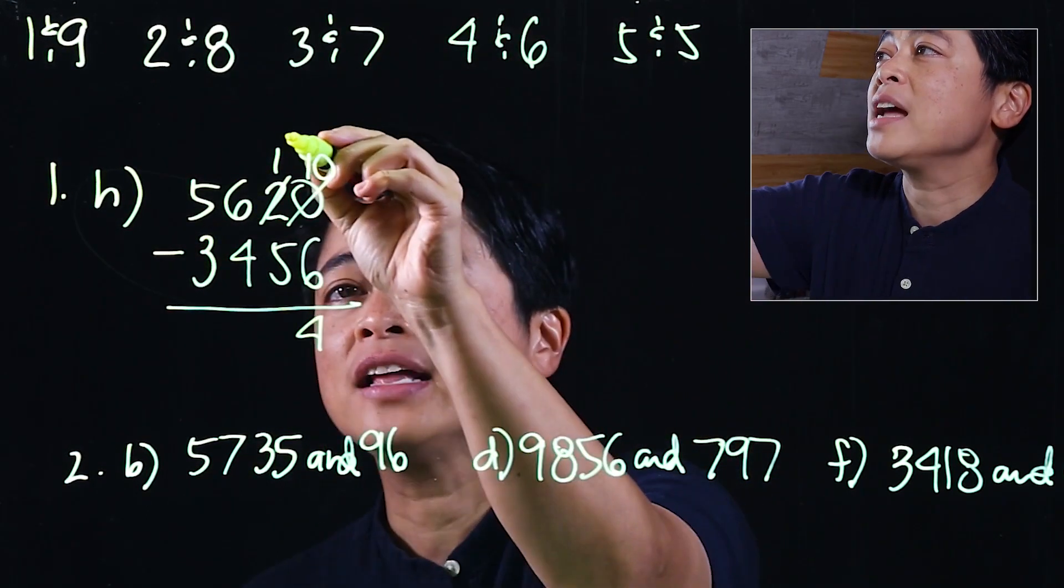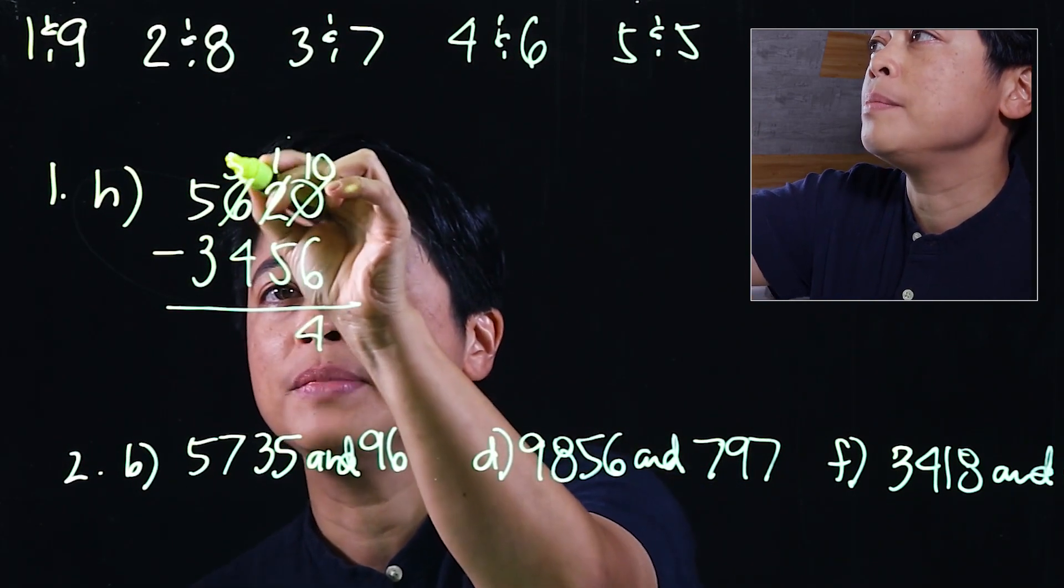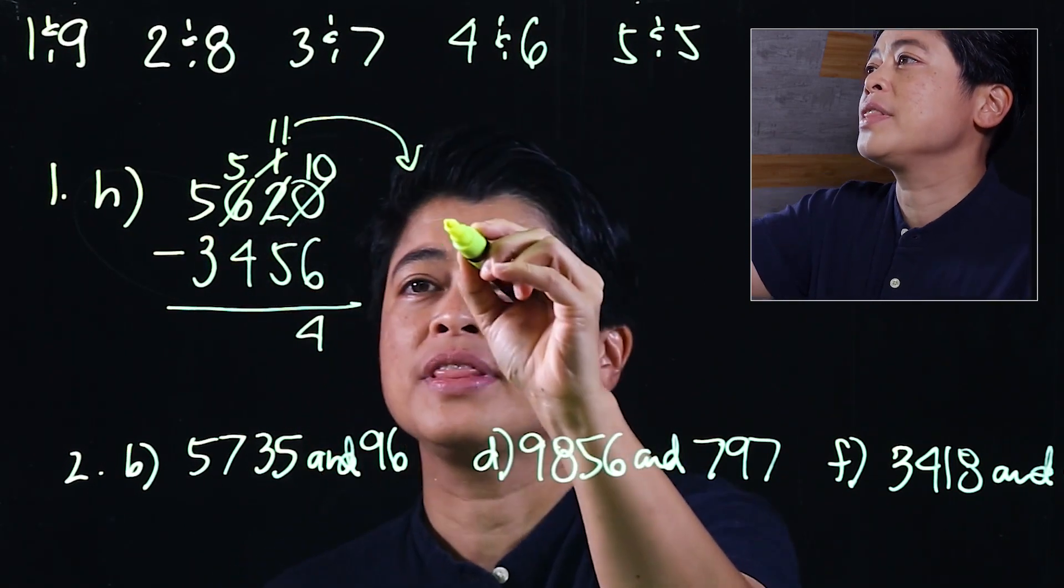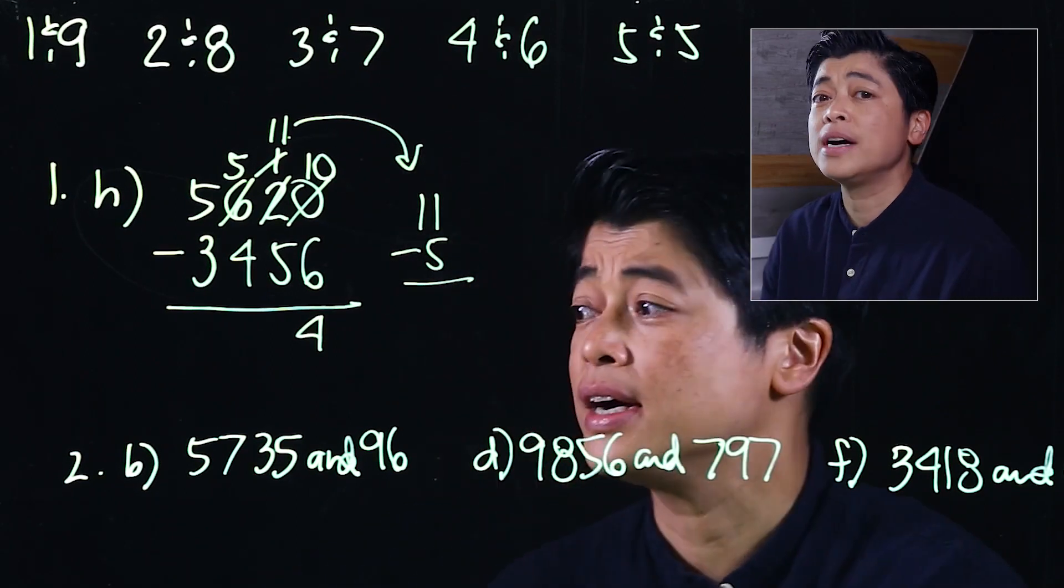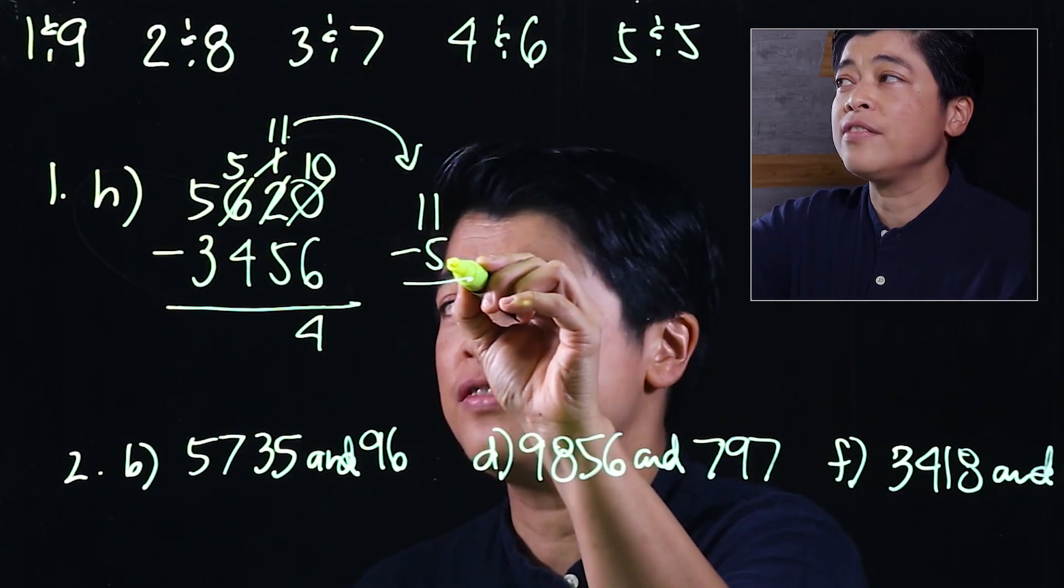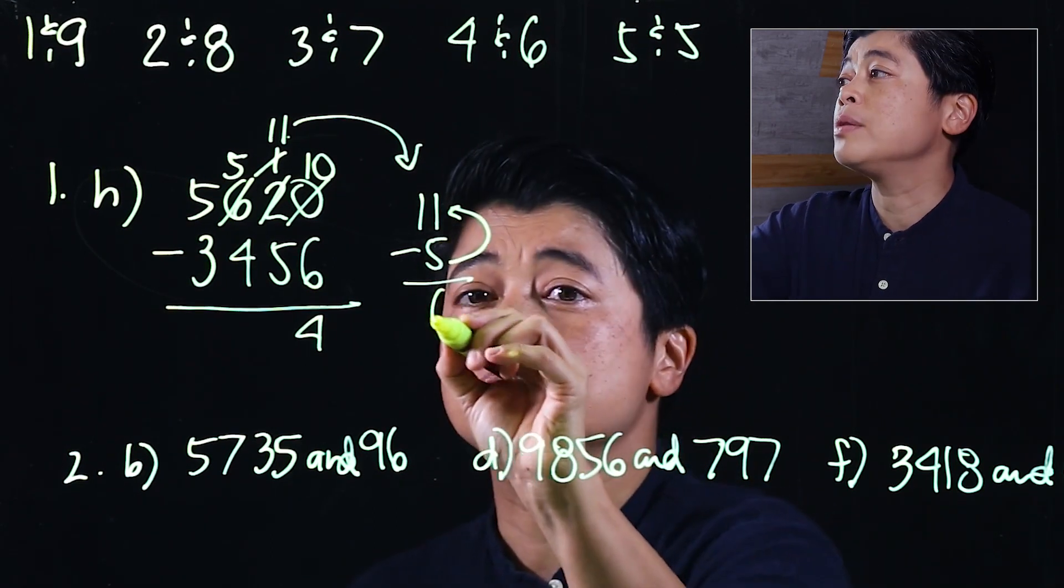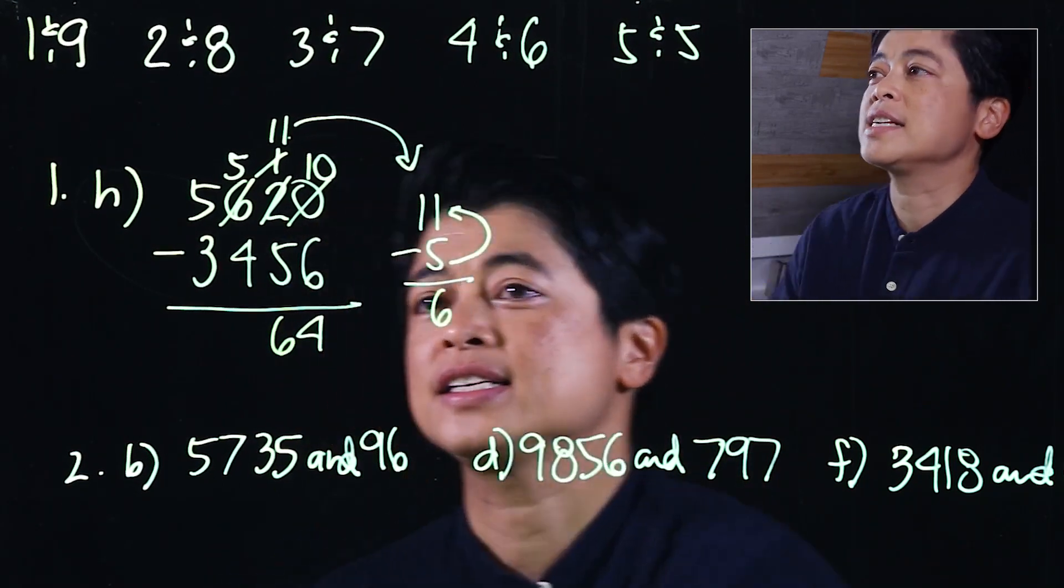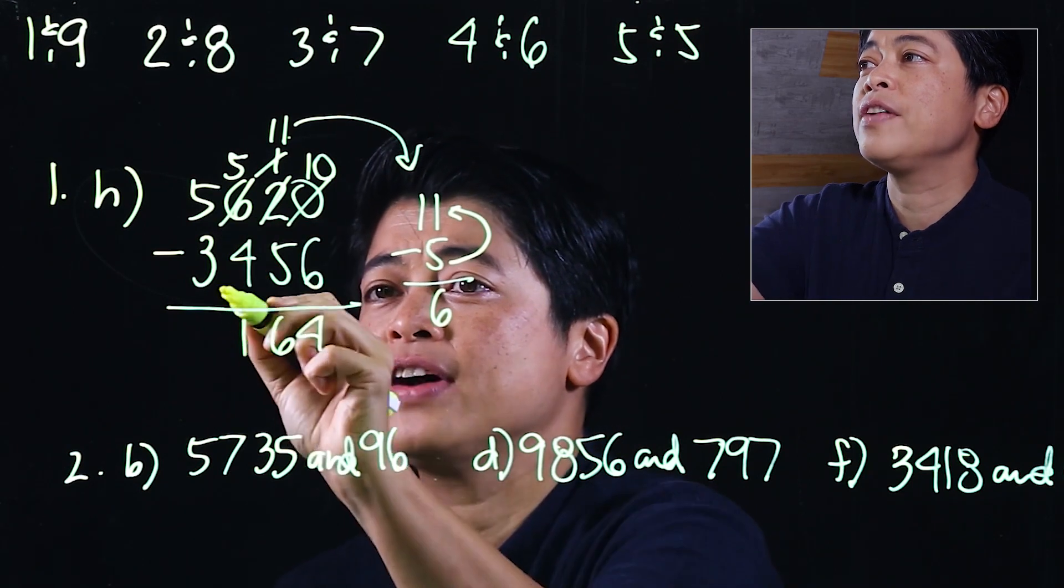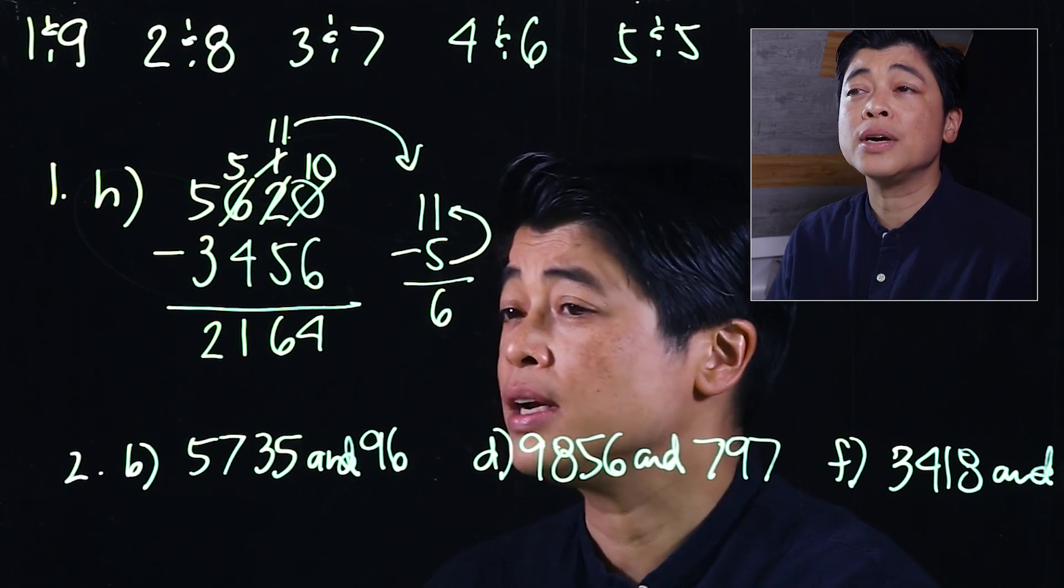We can't subtract 5 from 1, so we need to borrow, makes it 5, regrouped as 11. So I'll put that on the side, 11 minus 5. Again for consistency we start to think from 5. We need another 5 to get to 10, which means to get to 11 that would be 6. 5 minus 4 is 1 and 5 minus 3 is 2, so our answer should be 2164.